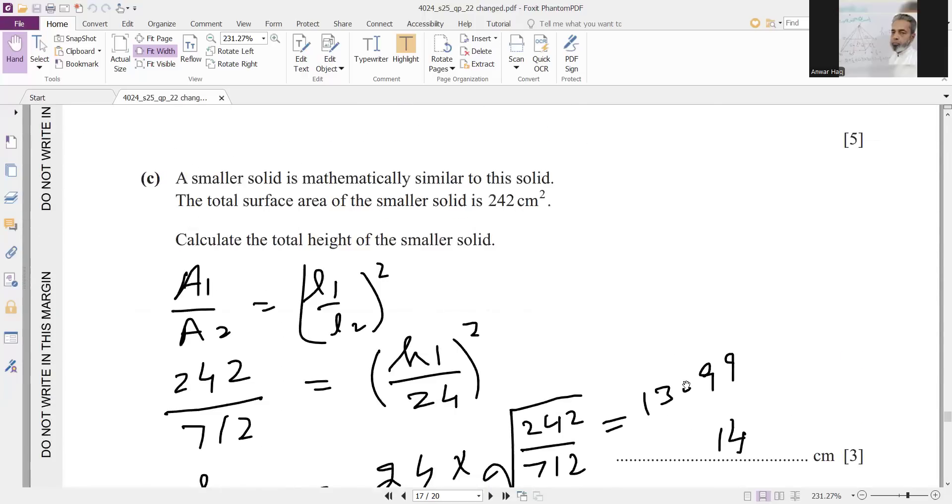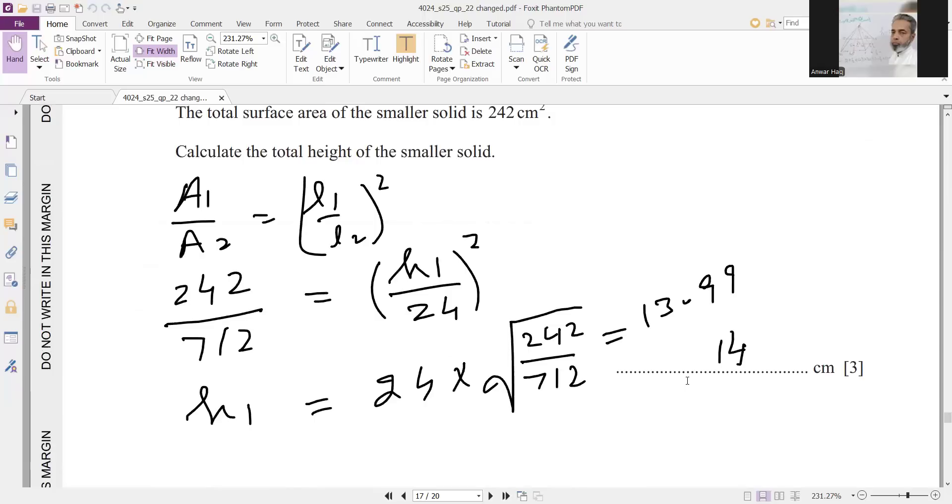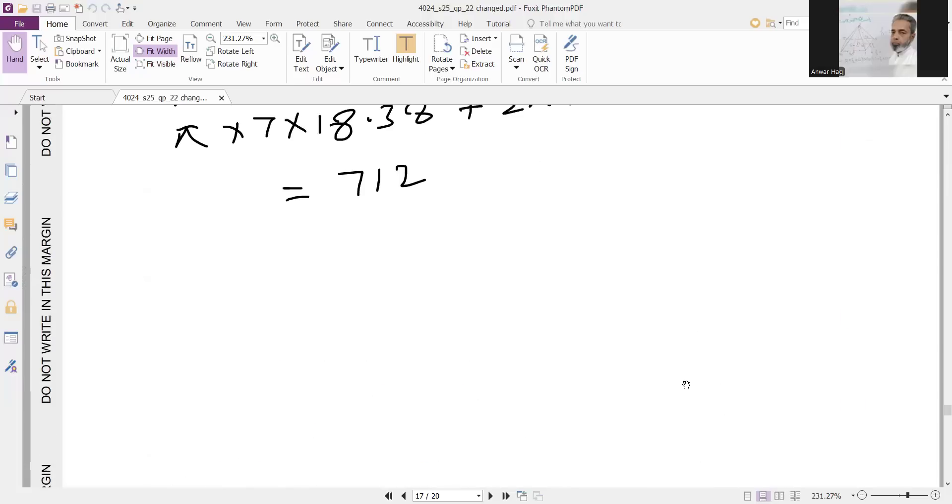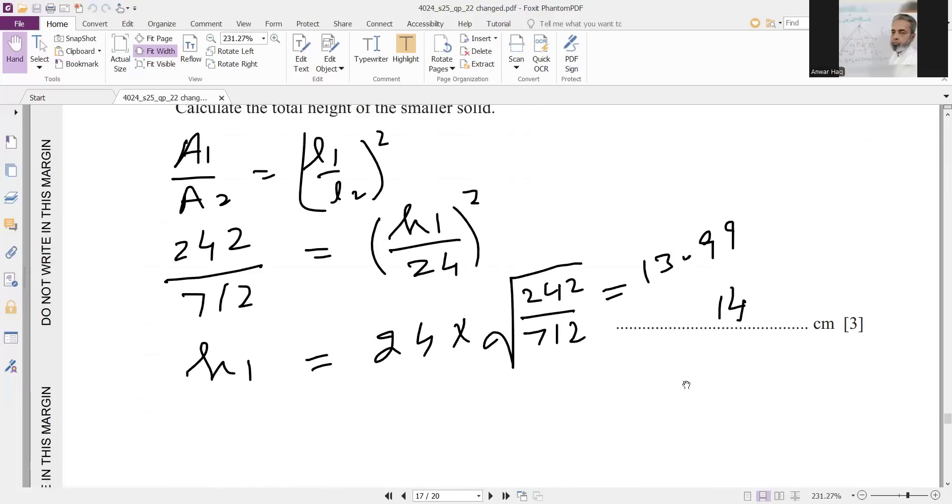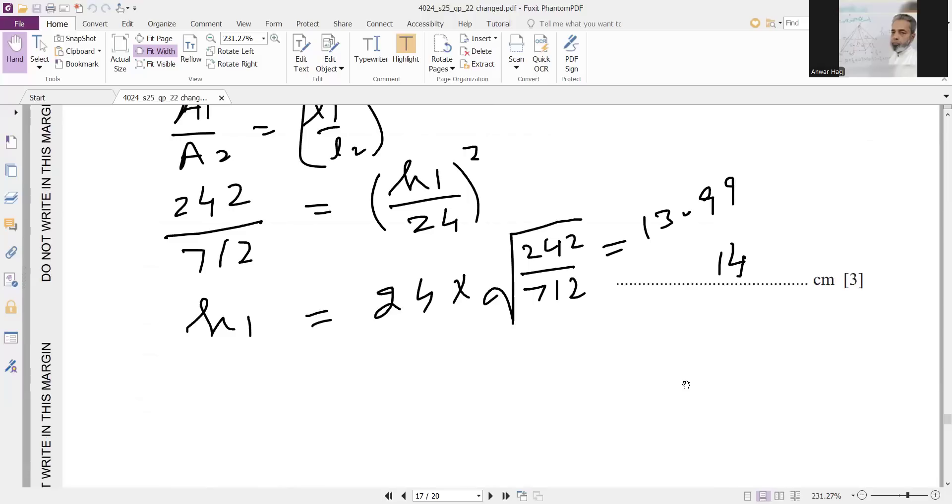And part c, a smaller surface area. Total surface area of the smaller solid is 242. So I will use 2 for small or 1 for large. So 242 over 712, which I have already calculated here. This is surface area. And then equals H1 over 24 whole square. By working, taking square root on both sides, use calculator. Your answer will be 14.